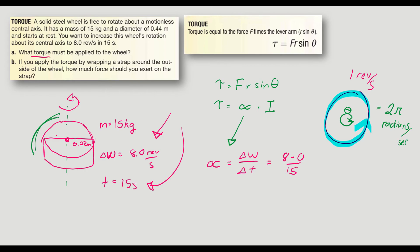And so we need to convert. If I'm going 8 revolutions per second, I'm going to multiply this by 2π. And that is actually 16π radians per second. So instead of 8 minus 0, we're going 16π minus 0. And that is giving me 16π over 15.